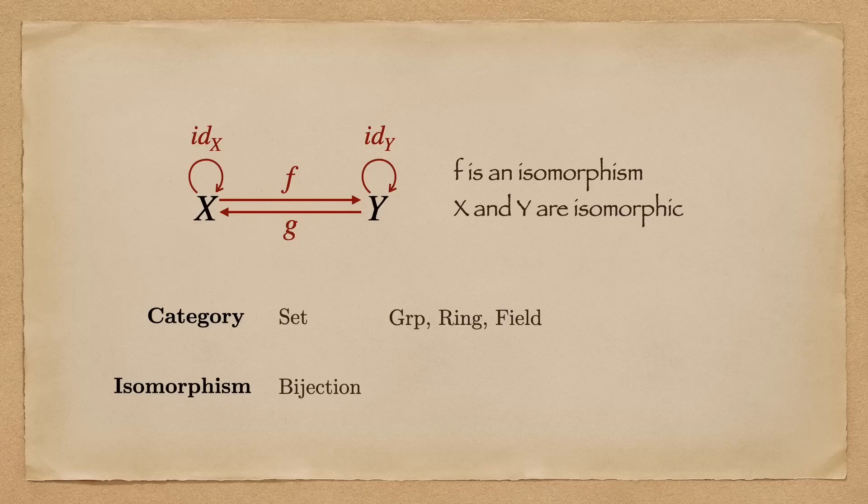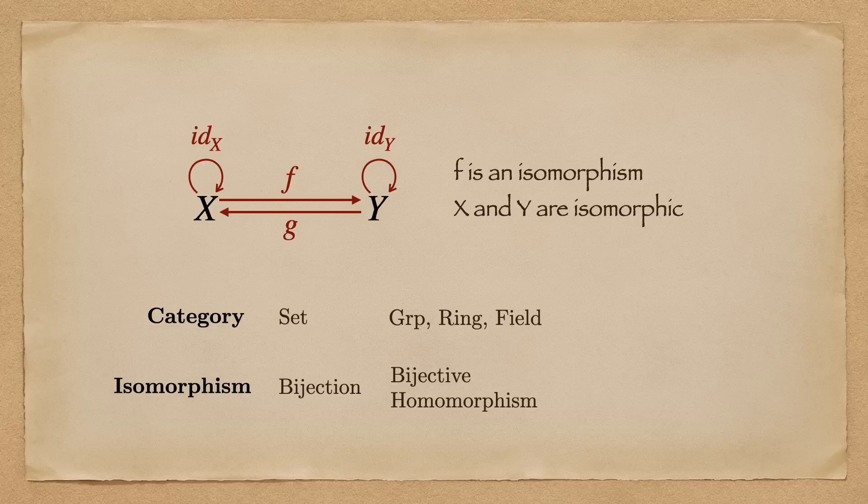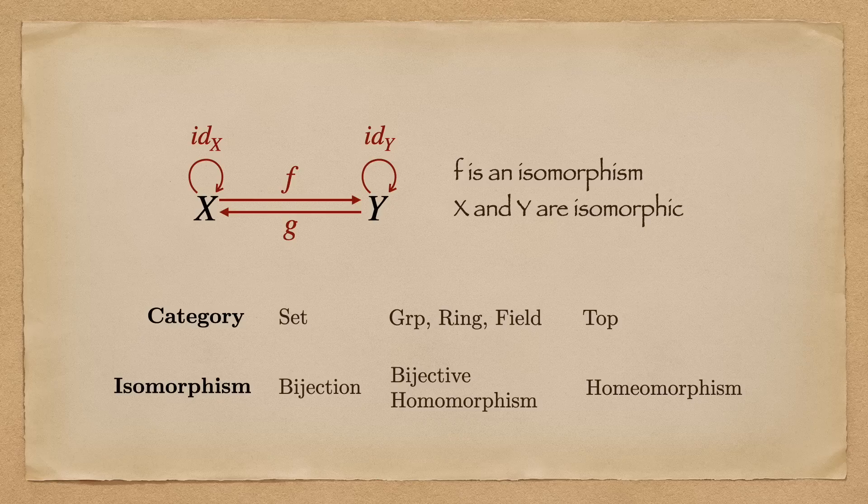Isomorphisms in the category of set are bijections. In categories group, ring, and field, the isomorphisms are bijective homomorphism. And in the category of topological spaces, they are homeomorphisms. Pretty clear, right? But there are some things that are not so immediately apparent.